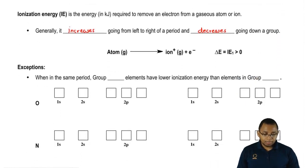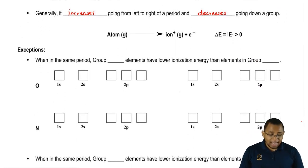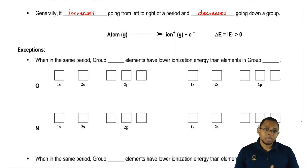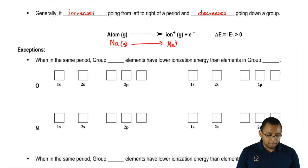A good example: an atom in its gaseous phase — if you remove an electron, it becomes more positive, so it becomes a positive ion. For example, you could have sodium gas. You remove an electron, so it becomes Na⁺ gas plus the electron we removed.